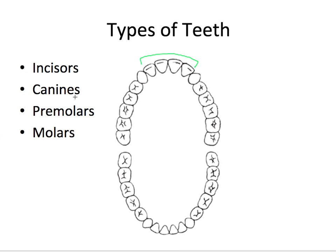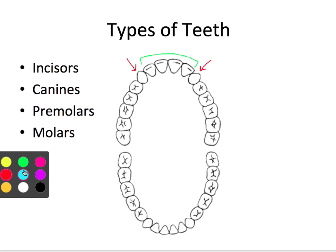The canines refer to the teeth right next door to the incisors. The canines are important for tearing and holding food and also important for aesthetics. Both the incisors and the canines together are referred to as the anterior teeth because they're in the front and they're the most visible of all our teeth.